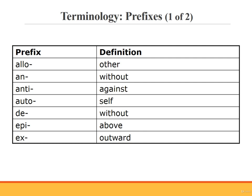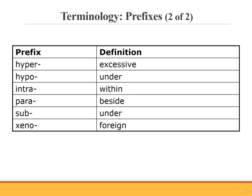Finally, we have prefixes used in relation to the integumentary system: allo, an-, anti, auto, de-, epi-, ex-, hyper — meaning excessive. An example using the prefix hyper is hyperhidrosis, which means abnormal condition of excessive sweat. Also: hypo-, intra-, para-, sub-, and xeno.